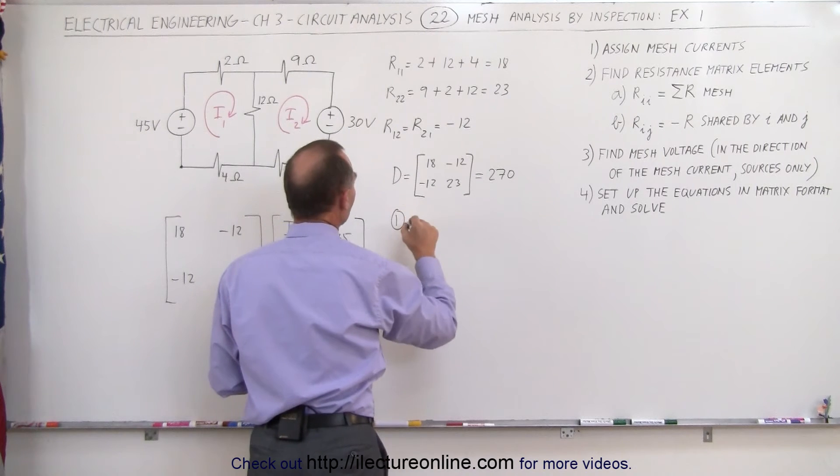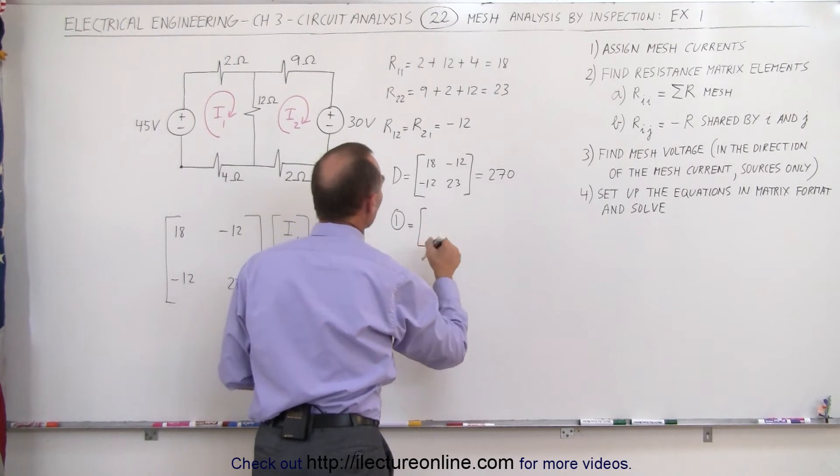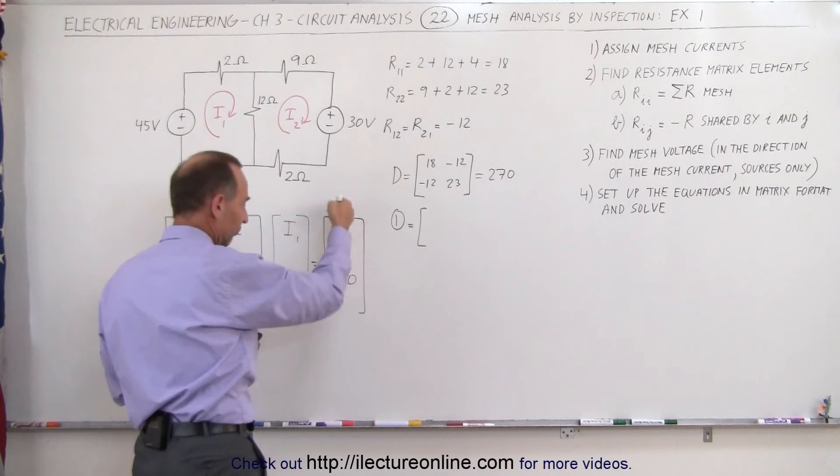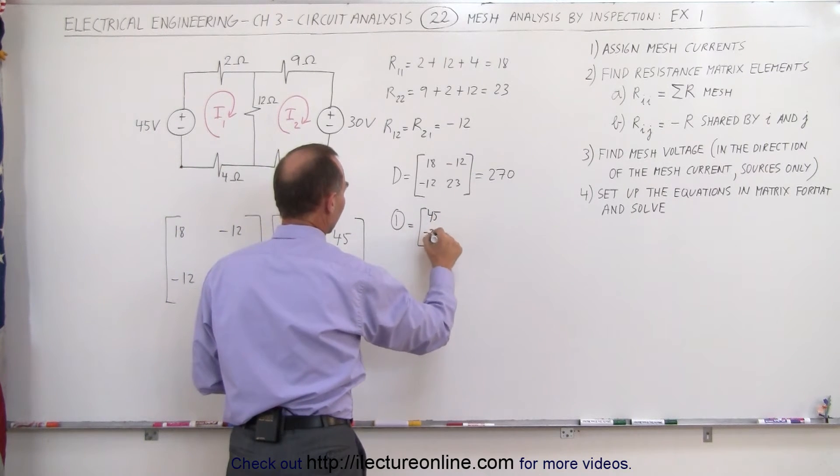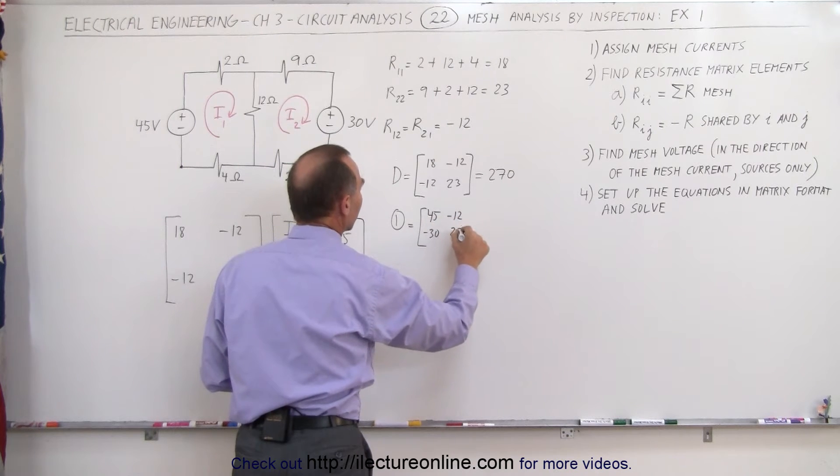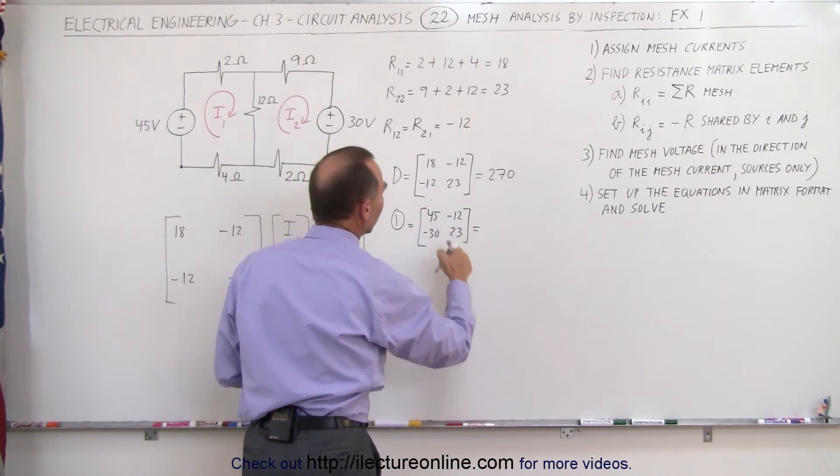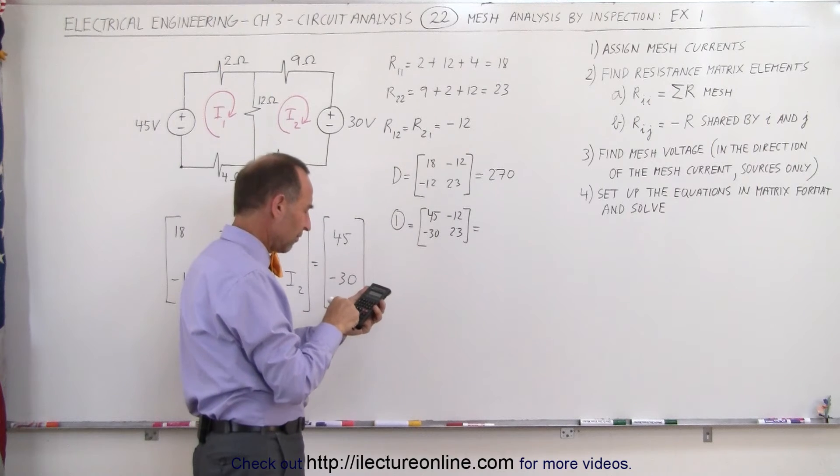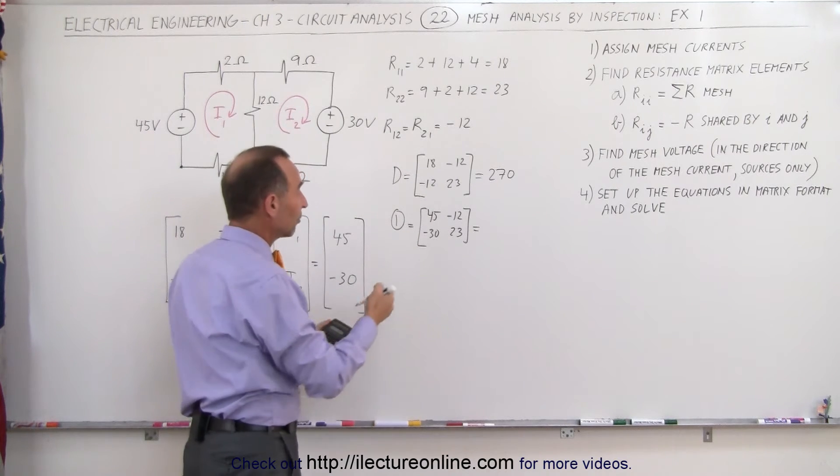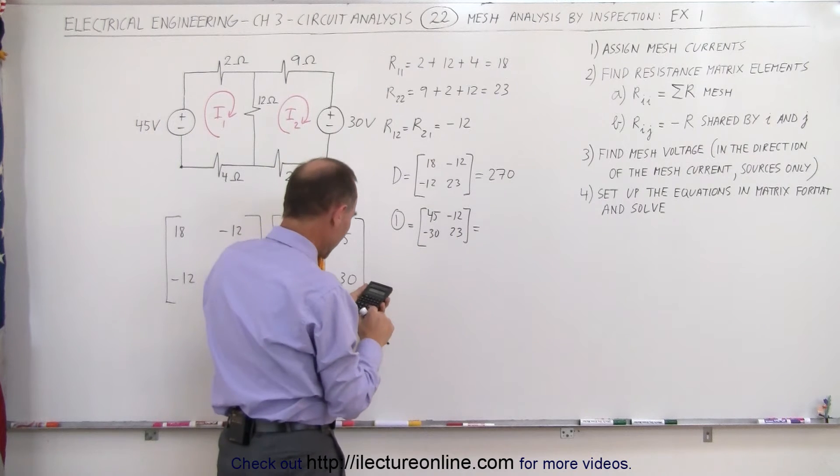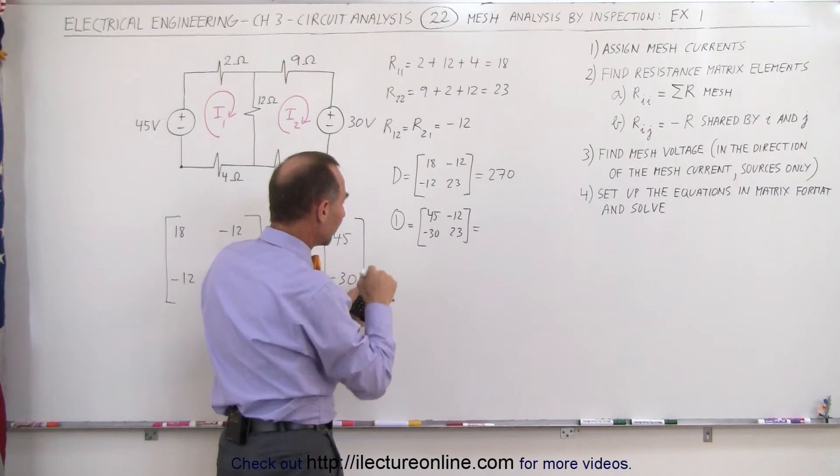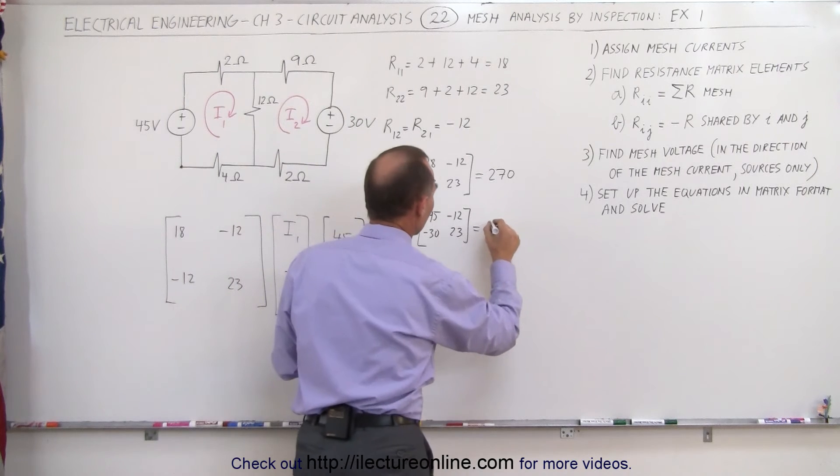Now to find matrix number one, what we do there is we replace the first column by the voltages from our voltage matrix, 45 and minus 30, and we keep the second column, minus 12 and 23. This is equal to the product of those two—45 times 23—and subtract the product of those two. Notice they're both negative, so we're going to subtract it: minus 12 times that, that's 360, and we get 675.